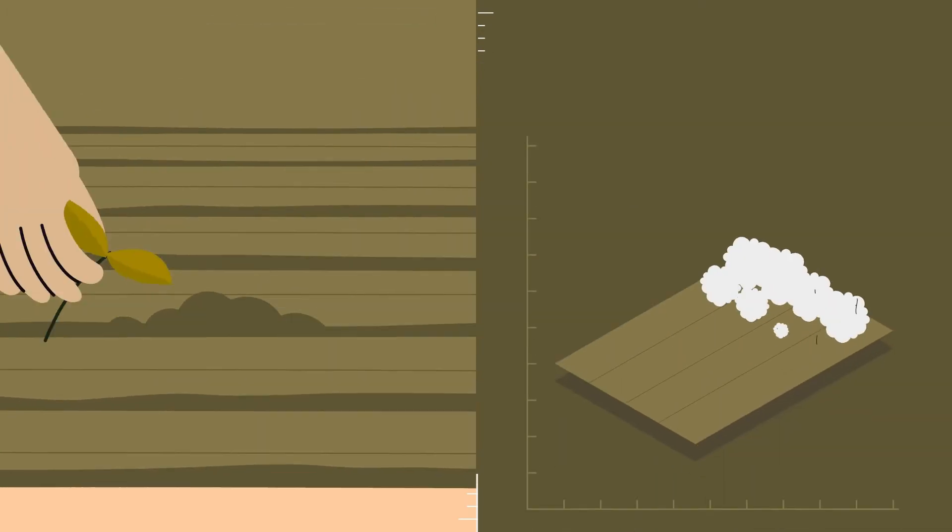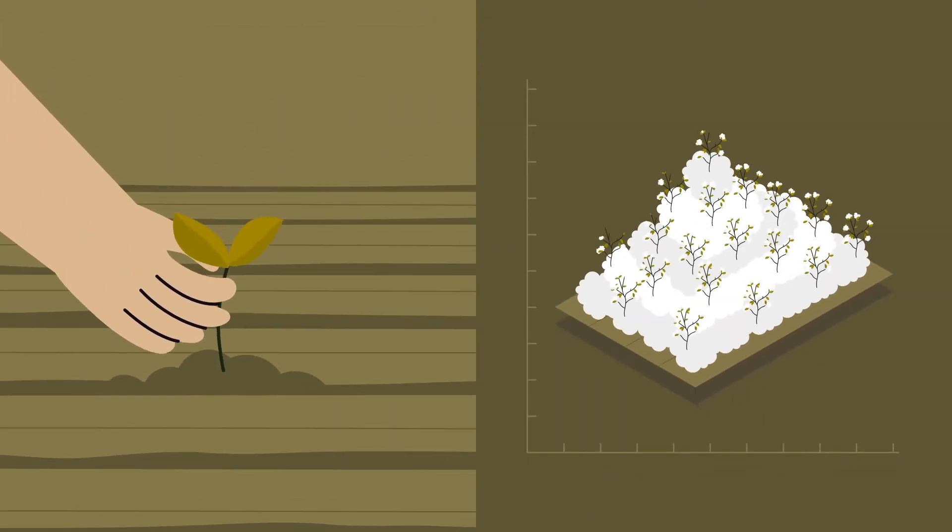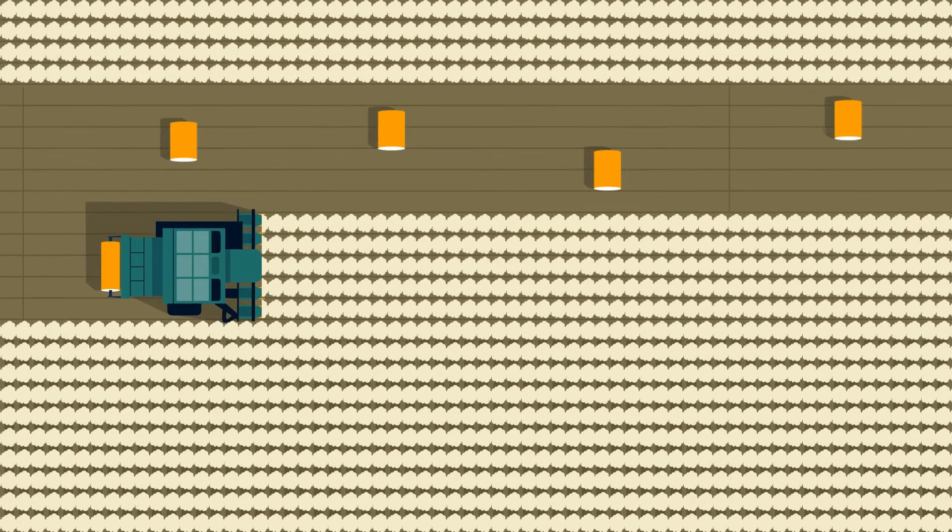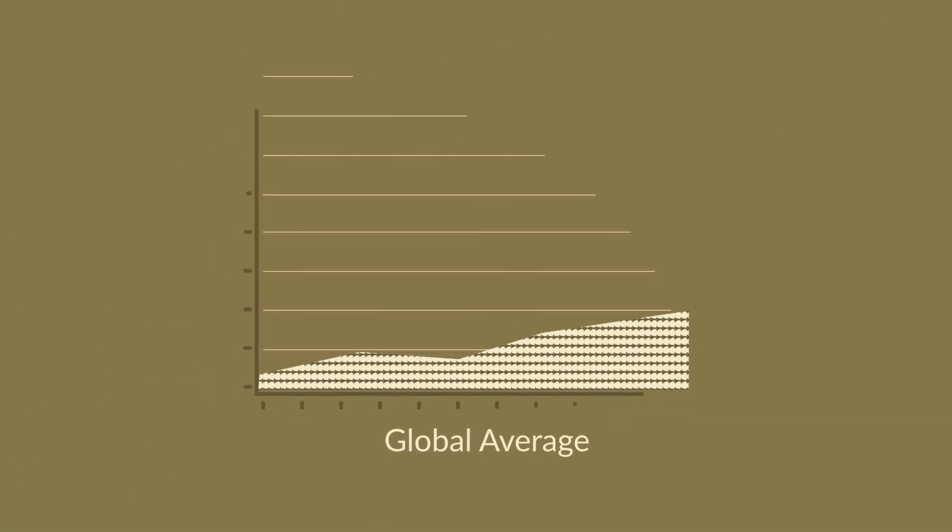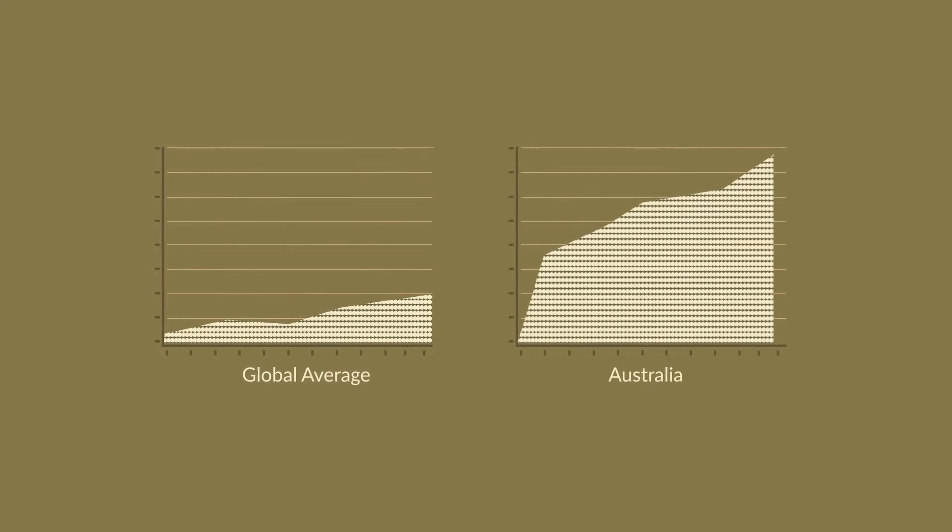Properly caring for our farms allows us to grow more cotton on less land, more than anywhere in the world in fact. Compared to the global average, Australian farmers grow three times the cotton per hectare.